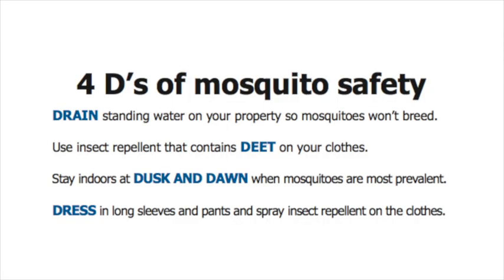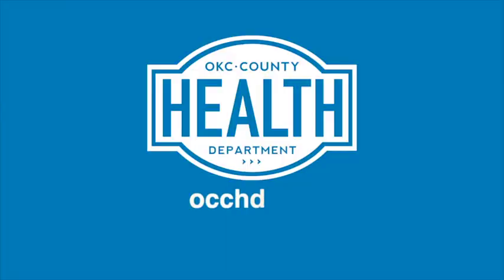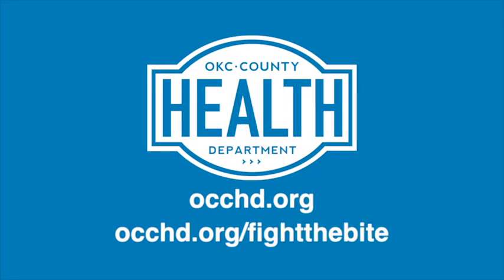In recap, we're going to go over the four D's once again: we want to drain any standing water in and around our property; we want to limit our time outside from dusk till dawn; we want to wear full-length clothing while outside; and we want to make sure we wear an insect repellent that contains DEET. For more information on mosquito prevention, you may contact Oklahoma City County Health Department at our website, occhd.org. Thank you.